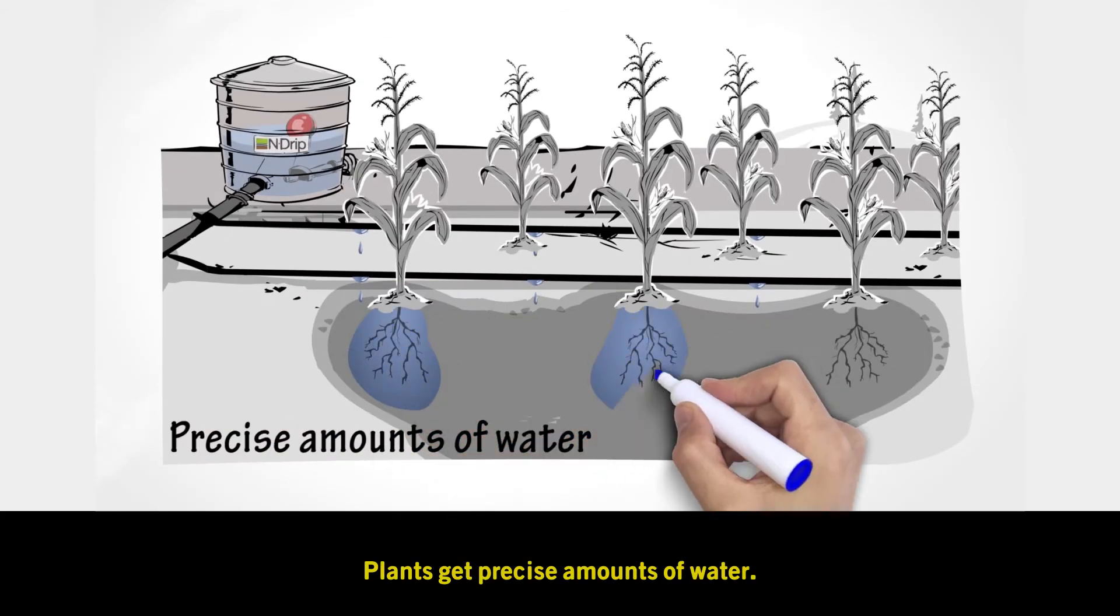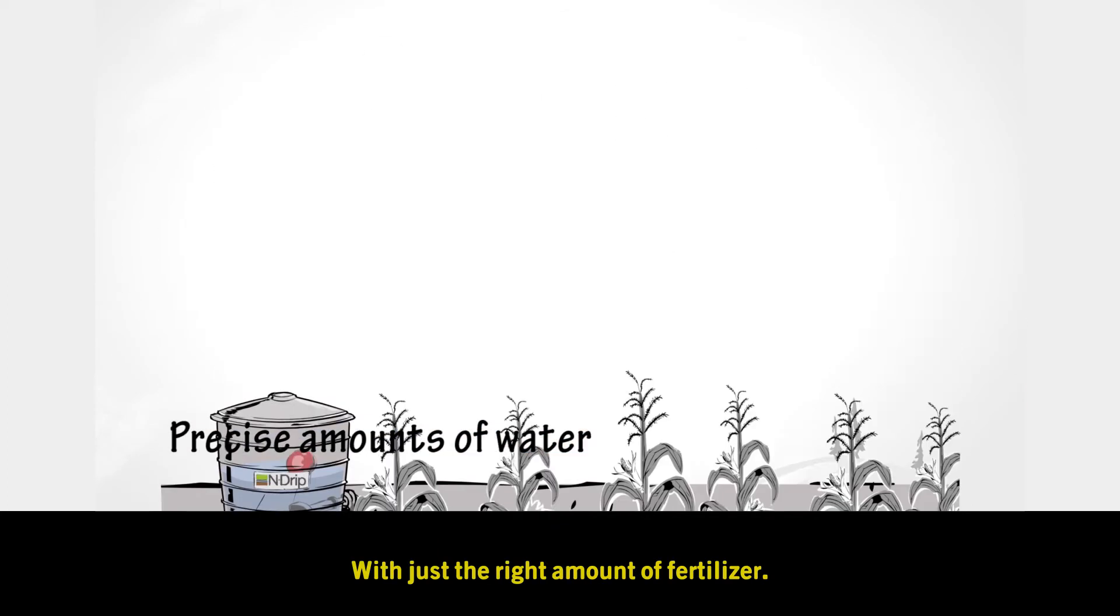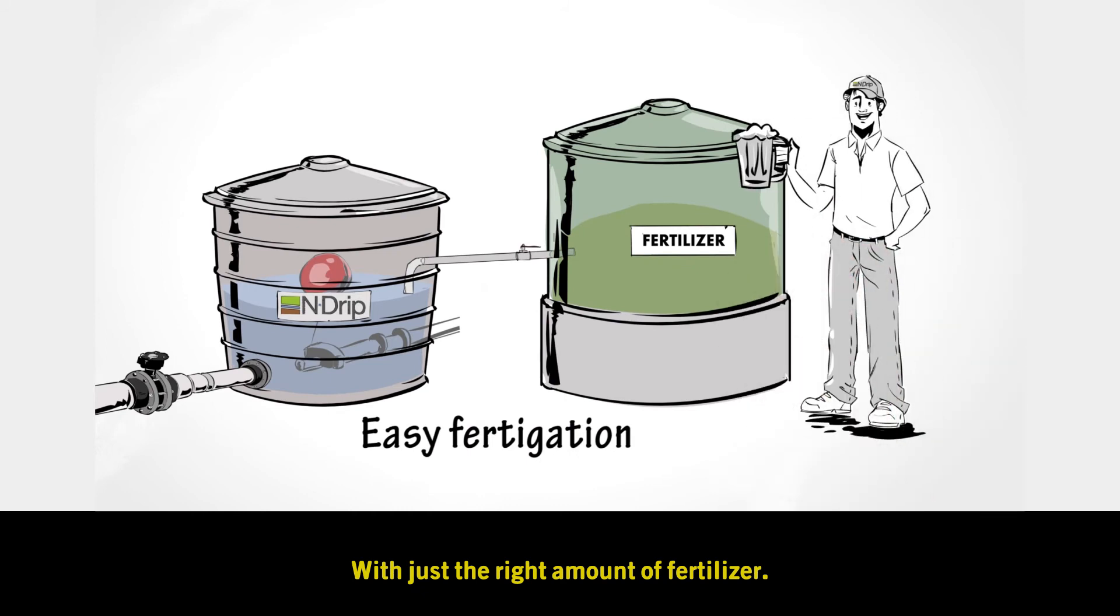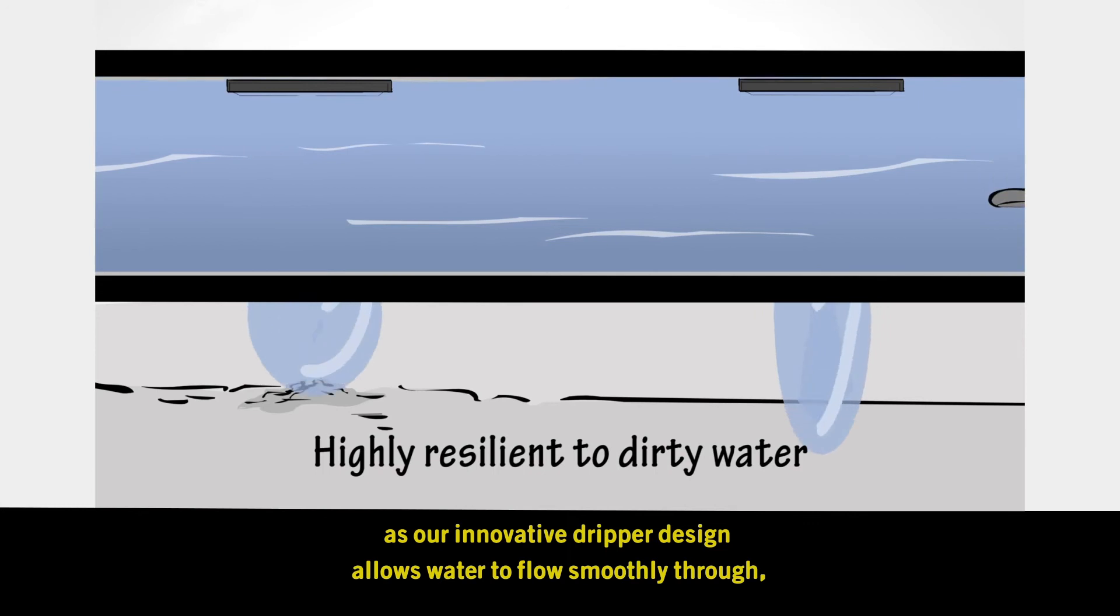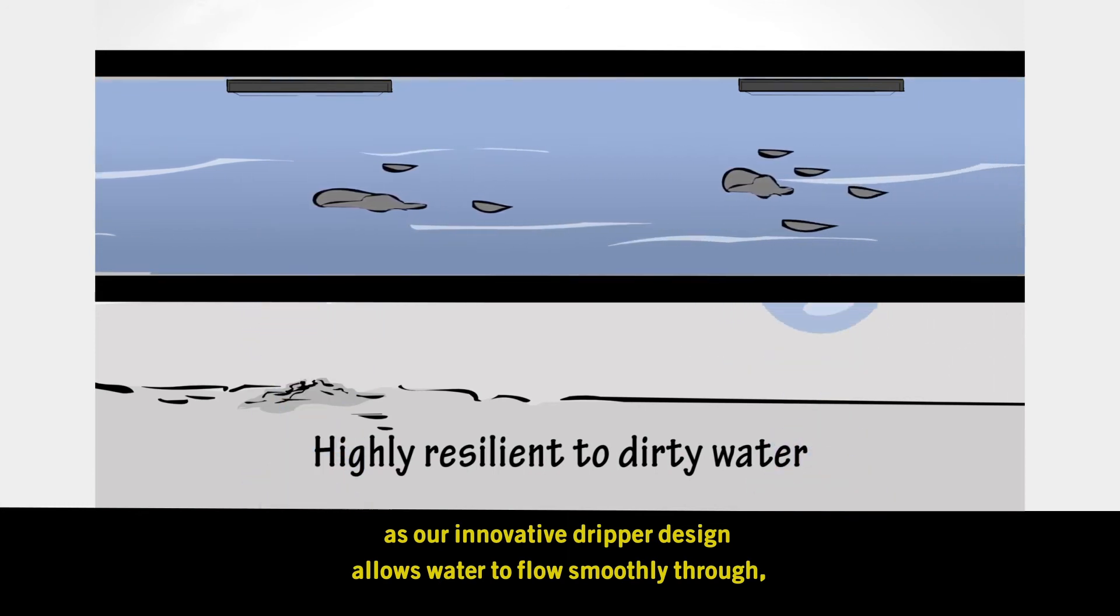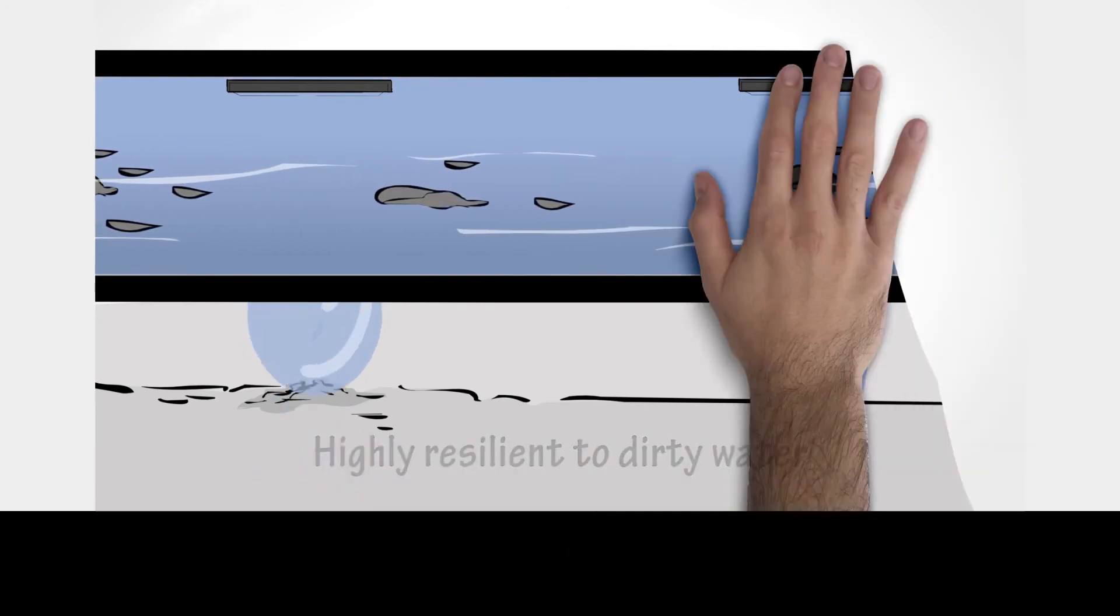Plants get precise amounts of water with just the right amount of fertilizer. Dirt won't cause clogging as our innovative dripper design allows water to flow smoothly through, no matter what.